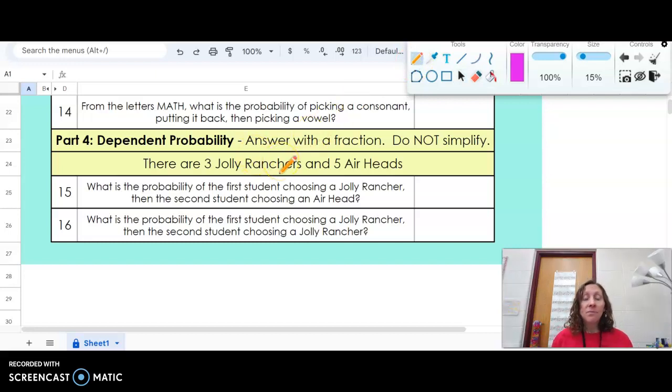Let's look at the last part. This one we have to answer with a fraction, but for this part, we do not simplify. There are three Jolly Ranchers and five Airheads. So all together, I have eight candies. What is the probability of the first student choosing a Jolly Rancher? Let's just stop there. Three of the eight candies are Jolly Ranchers, so that's my first one here.